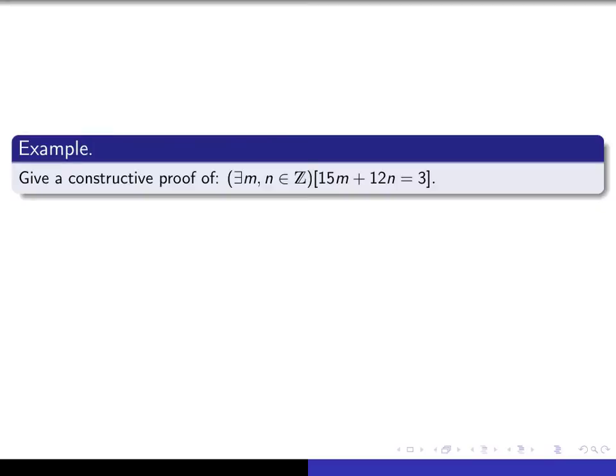Here's another example. Give a constructive proof that there exists integers m and n such that 15m plus 12n is equal to 3. If you think about it for a moment, 15 minus 12 is 3. So if you just take m equal to 1 and n equal to minus 1, it works.